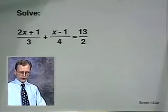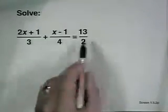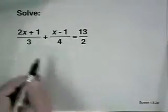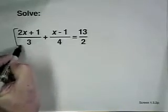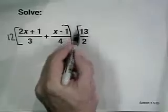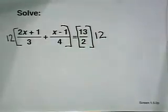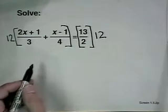Here's how it works. We're going to multiply both sides of this equation by the common denominator, which is 12. In doing so, that makes the denominators cancel out.